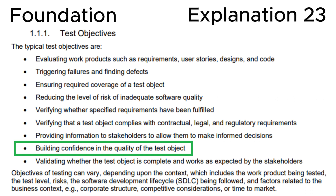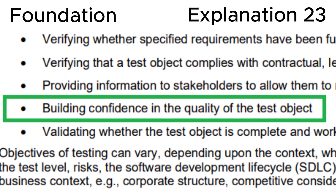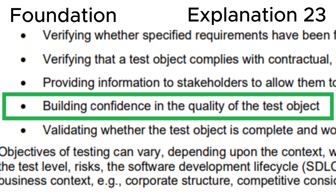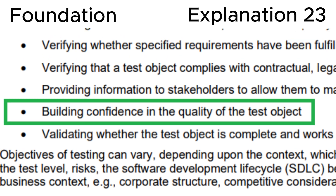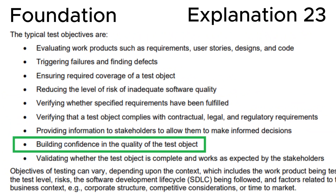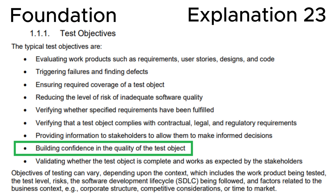Explanation: Let's look at section 1.1.1, Test Objectives, in the ISTQB syllabus, where we can see that one of the objectives is building confidence in the quality of the test object. This is fully consistent with the correct answer A. Remember: building confidence in quality is the primary reason for testing — not detecting bugs, not gathering evidence for a lawsuit, and not training users.